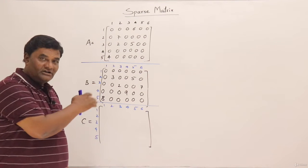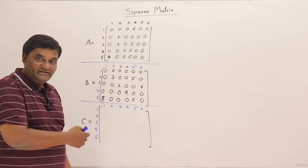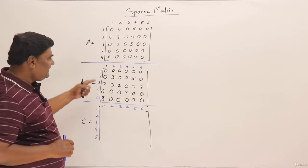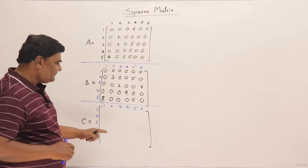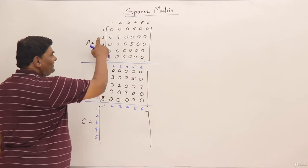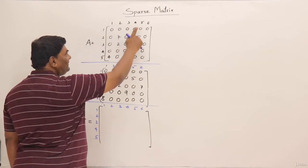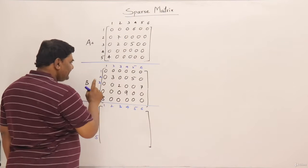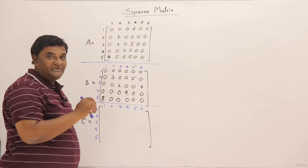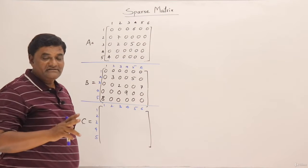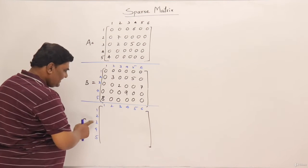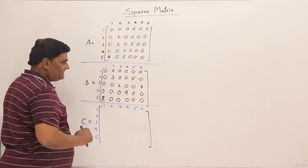First of all I will solve it manually using pen and paper — how I can add these two and what should be the result. The dimension of the first matrix is 5 by 6, the second matrix is also 5 by 6, so yes they can be added. For adding two matrices their dimensions must be same. The third matrix C has also been taken as size 5 by 6.